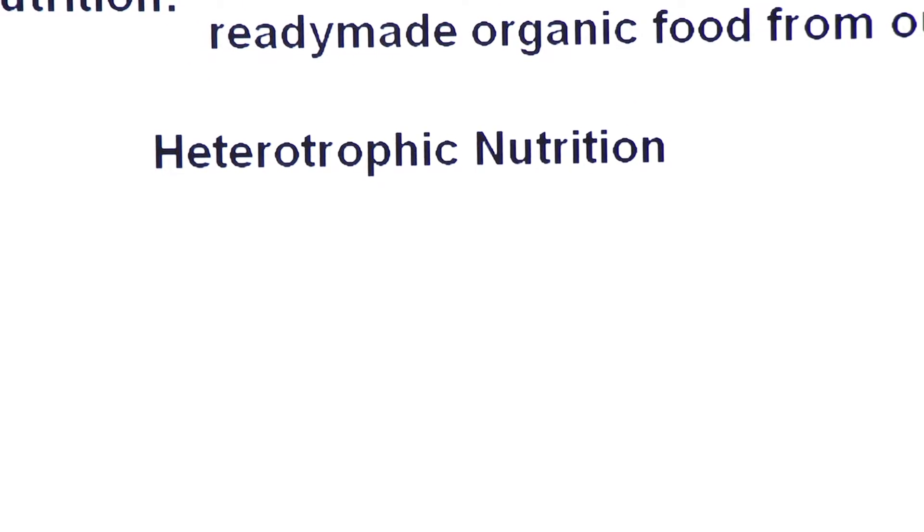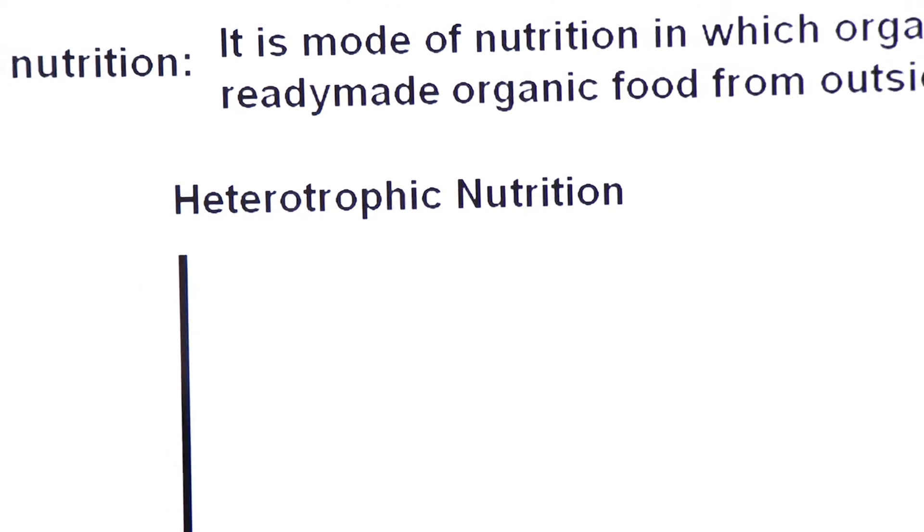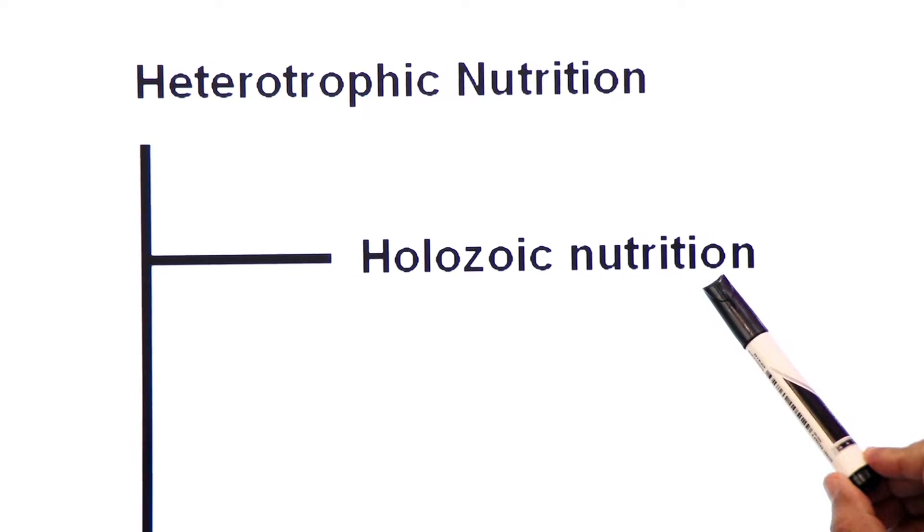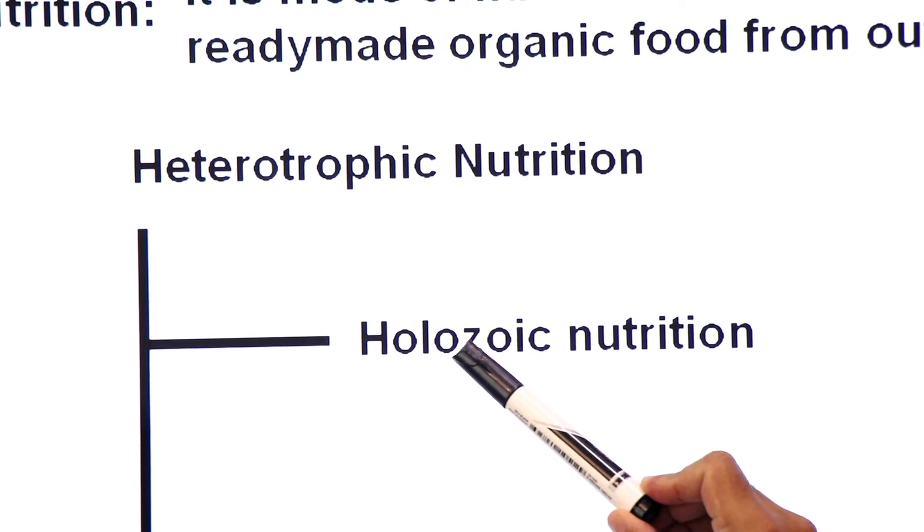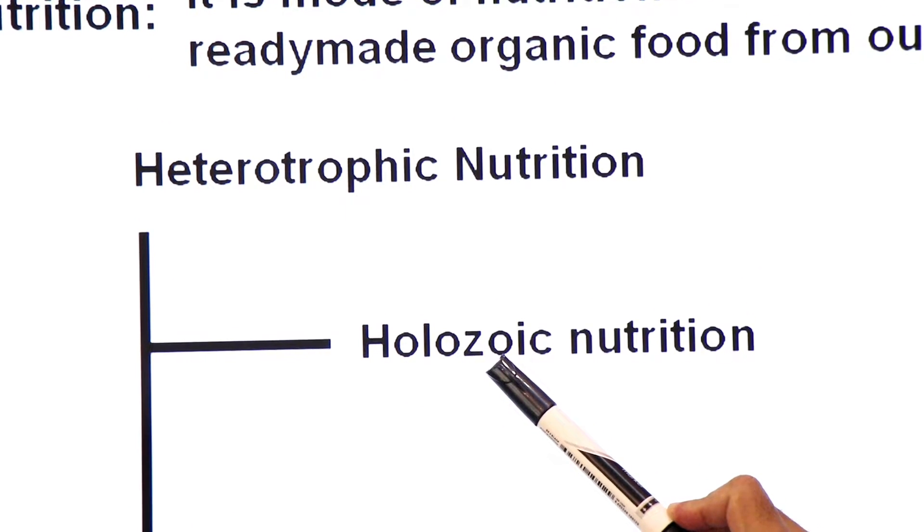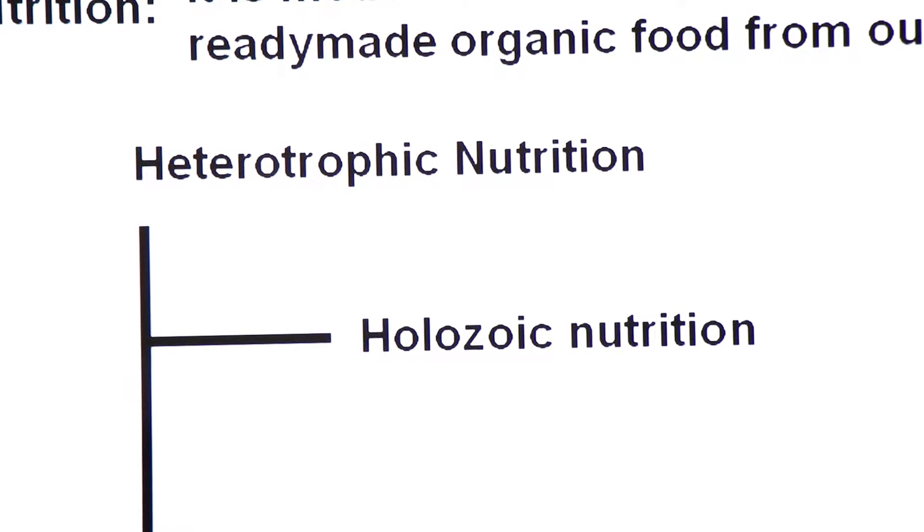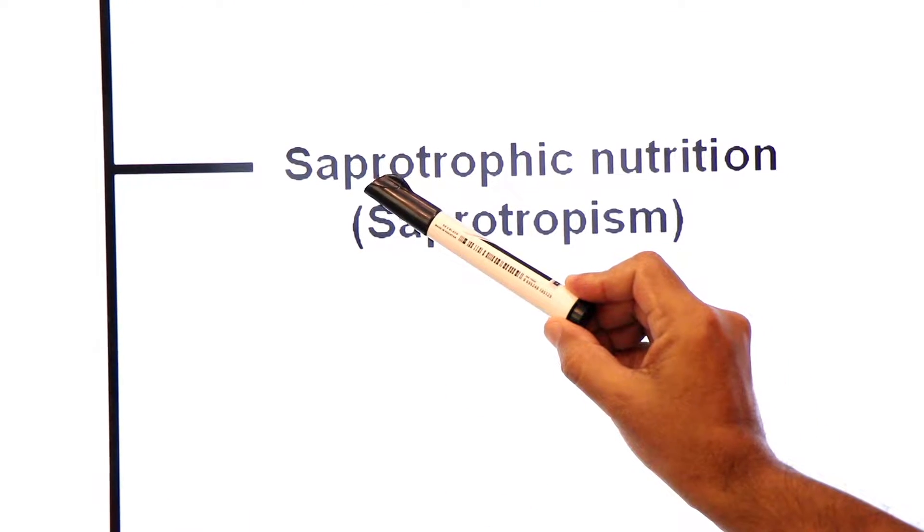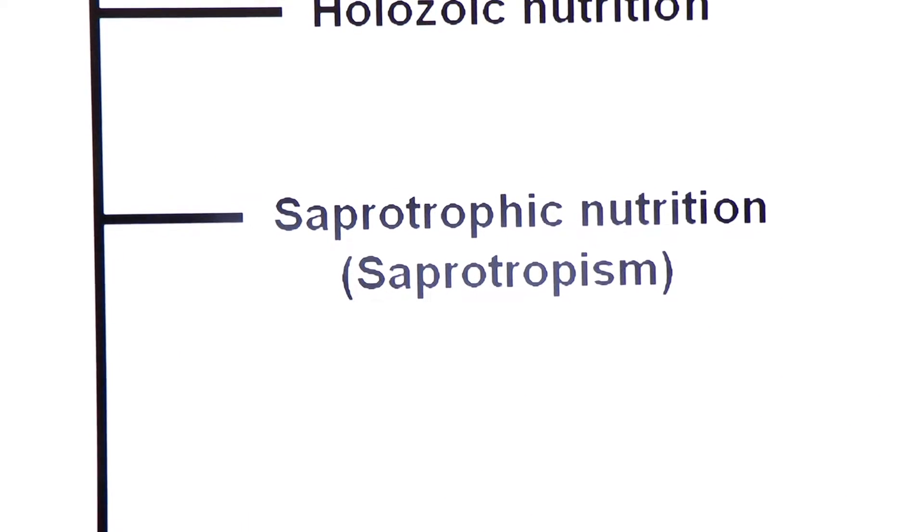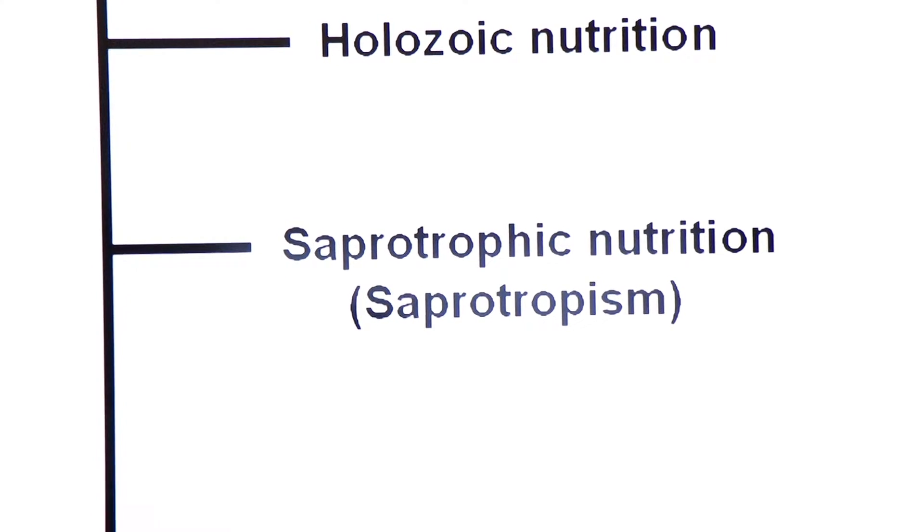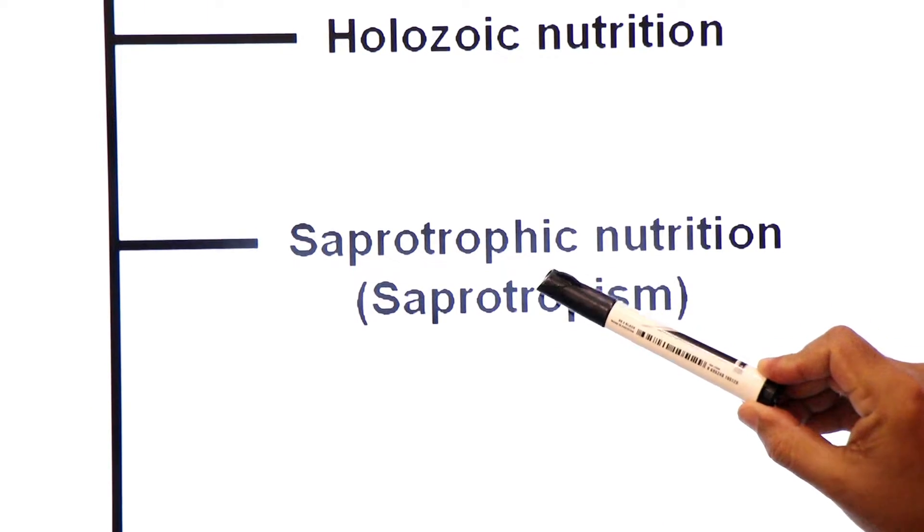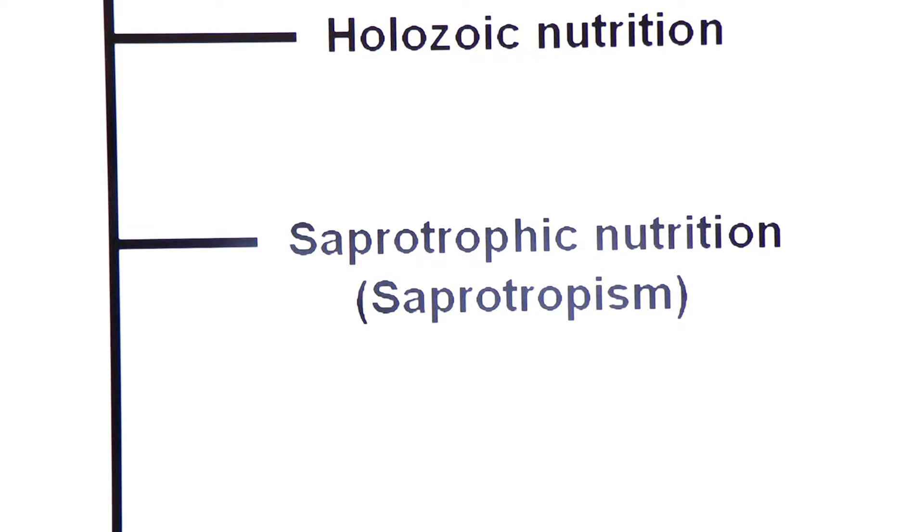There are three types of heterotrophic nutrition. First type holozoic nutrition - holo means whole, zoic means animal, complete animal-like nutrition. Second type saprotrophic - sapros means dead, trophic means nourishment, such a type of nutrition in which organisms obtain food from dead organic matter. It is also called saprotrophism.